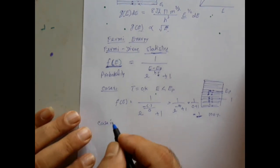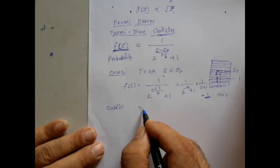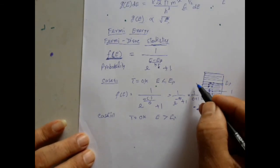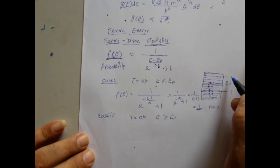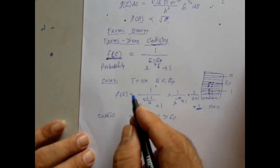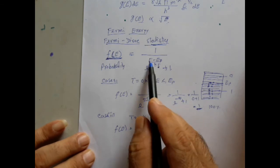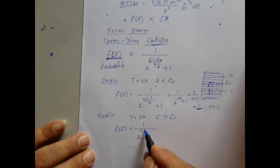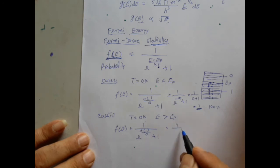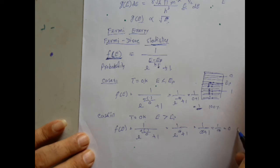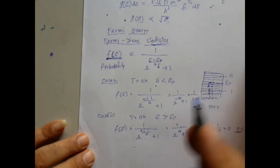Case 2: at absolute zero Kelvin with electron energy greater than the Fermi energy. At 0K, no electrons exist above the Fermi level, so the probability should be 0%. Substituting: E > EF means E minus EF is positive, divided by T = 0, giving e^(+∞) = ∞. Therefore F(E) = 1/(∞ + 1) = 1/∞ = 0. This confirms 0% probability — no electrons are present above the Fermi level at absolute zero Kelvin.